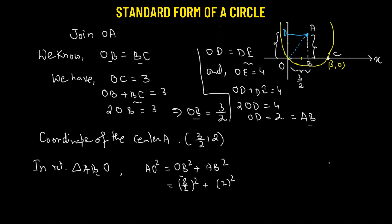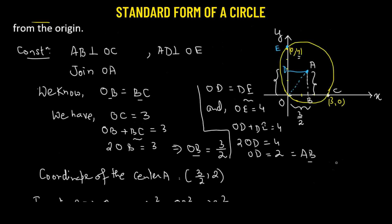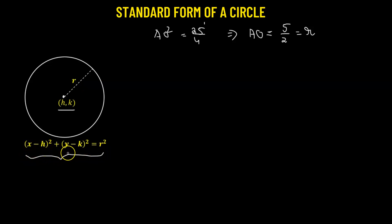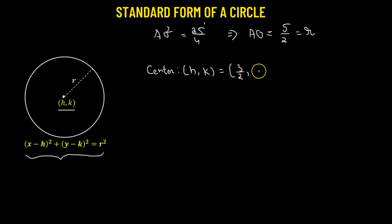We have finally found out the radius as well, which is 5/2. We now have the coordinate of the center (3/2, 2) and the length of the radius r = 5/2. Now that we have the radius and the coordinate of the center, we can easily find out the equation of this particular circle.